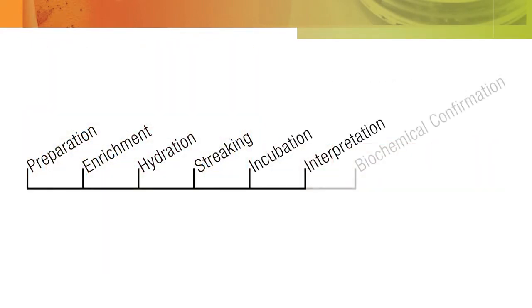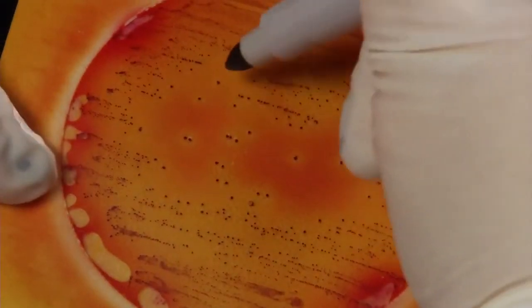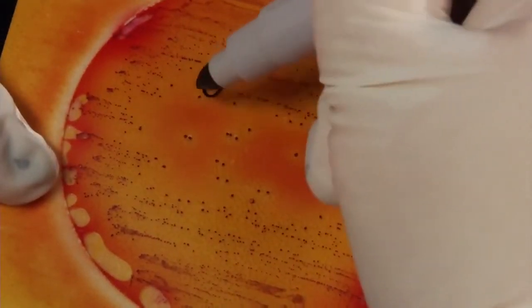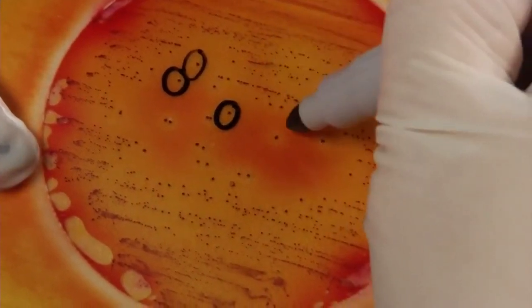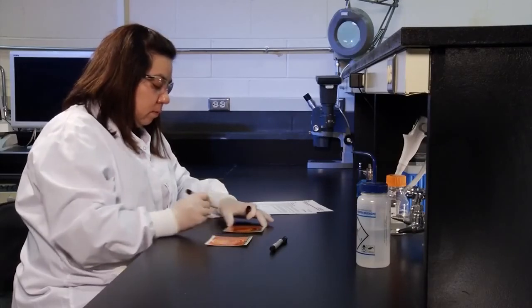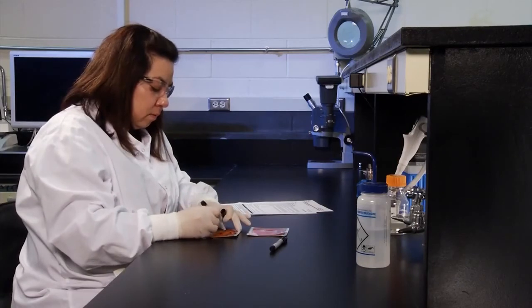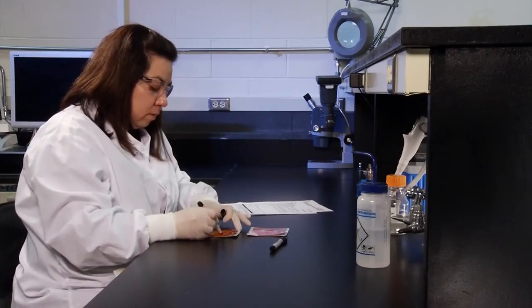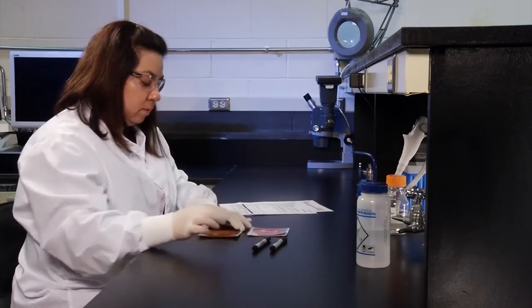If you have found presumptive positive salmonella colonies, perform the following steps. First, take out a permanent ultrafine tip marker and circle a minimum of five isolated presumptive positive colonies on the 3M Petrifilm Salmonella Express plate top film. Second, biochemically confirm all circled salmonella presumptive positive results using the 3M Petrifilm Salmonella Express Confirmation Disc.